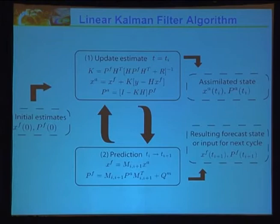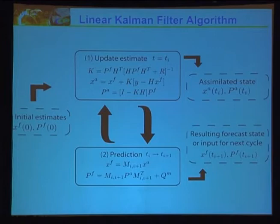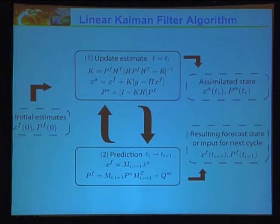The linear Kalman filter theory works nicely with small linear models, but breaks down with nonlinear models. An alternative for nonlinear models is the extended Kalman filter, which works well for small nonlinear models. Once you get into thousands or millions of variables, the extended Kalman filter becomes very expensive because you have to evolve this covariance matrix in time, which becomes computationally infeasible.